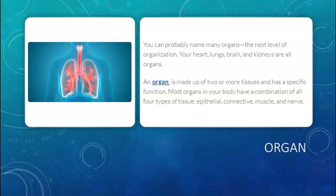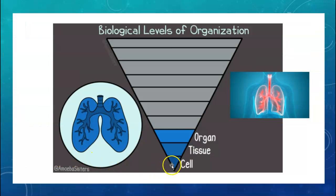Most organs in your body have a combination of all four types of tissue: epithelial, connective, muscle, and nerve. So remember — cells organize into tissues, and tissues organize into organs.